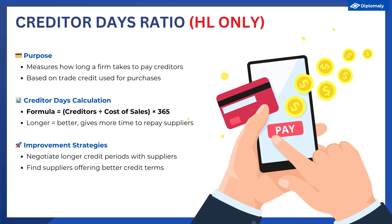The next ratio is the creditor days ratio. This calculates the average number of days it takes for a business to pay back its debts — you can think of this as the opposite of the debtor days ratio. The business typically needs to pay back its debts to suppliers who have already provided goods and services, typically raw materials, but the business has not paid them back yet. Remember that this is also classified as a source of finance called trade credit, which is covered in Unit 3.2. This ratio is calculated by creditors divided by cost of sales times 365.